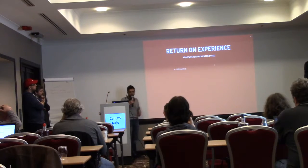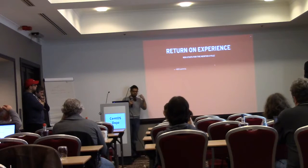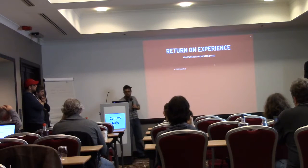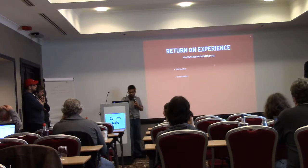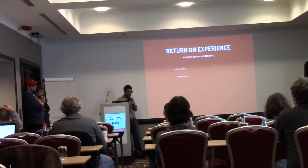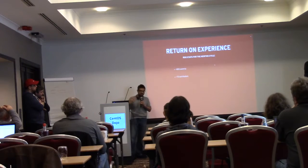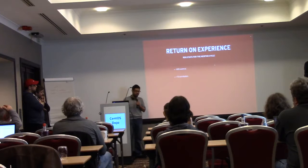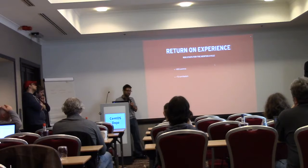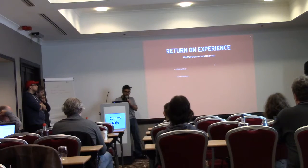For the Newton cycle — the previous cycle, as we are currently in the Ocata cycle — we had 800 commits and about 70 contributors. To give you an idea, my team, which is the RDO engineering team at Red Hat, is about 8 people and not all of them are doing this work. So that gives you an idea of how many external contributors we have from outside.